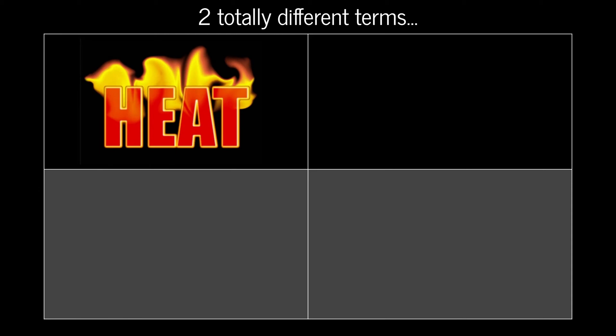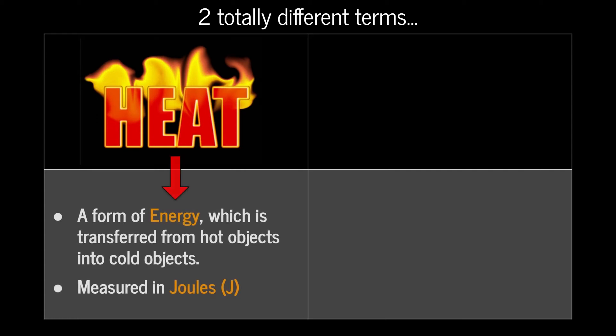The first word is heat. Heat doesn't necessarily mean that something is hot, meaning at a high temperature. Instead in physics the technical term for heat is a form of energy which is transferred from hot objects into cold objects. Since heat is a form of energy we measure it in units of joules.